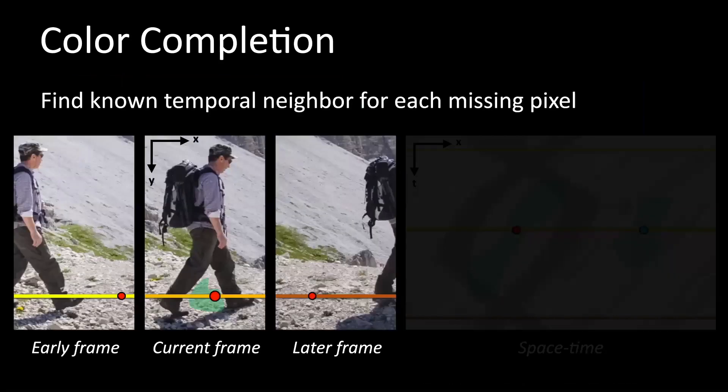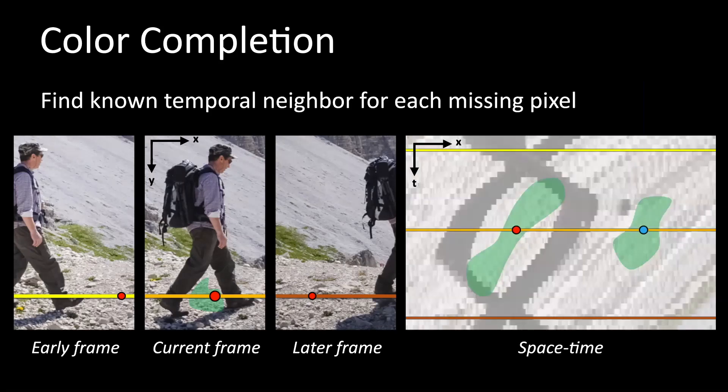In the current frame, all pixels in the green region are missing. Our goal is to find temporal neighbors for each missing pixel. The right figure shows a space-time visualization for the highlighted scan lines in the left images. The video is a height-by-width-by-time tensor. We gather space-time visualization by slicing the tensor at y equals y prime. The yellow, orange, and brown lines in the right image represent the scan line in different frames.